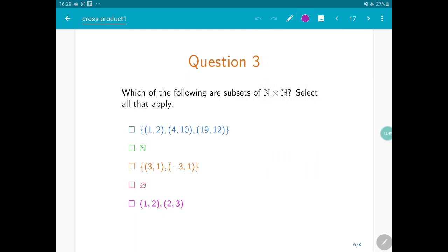Okay, so let's go one by one. Is the first one an element of N times N? So I have to make sure that for every element, so I have three elements, I have to make sure that both coordinates are natural integers, which is true for the first one, because 1 and 2 are natural integers, for the second and for the third one. So the first one is a subset.